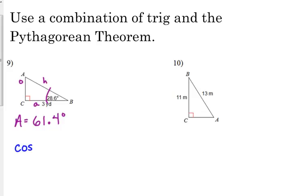It really doesn't matter. You could just as easily do this problem with tangent. Okay? So the cosine of 28.6 degrees is equal to the adjacent 3 over the hypotenuse. I'm just going to leave it as H.